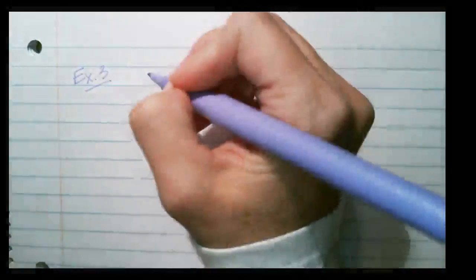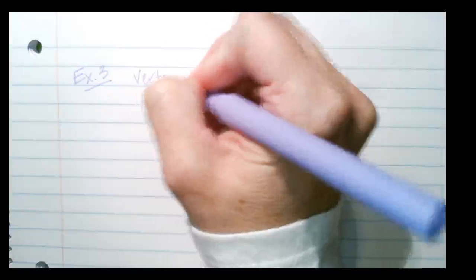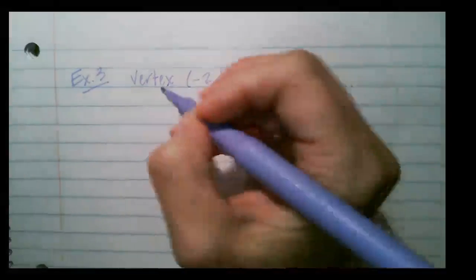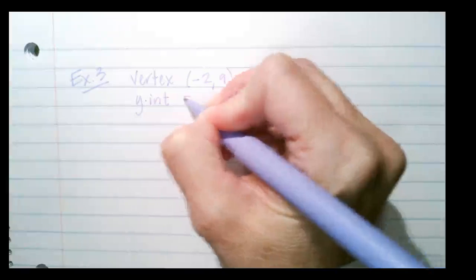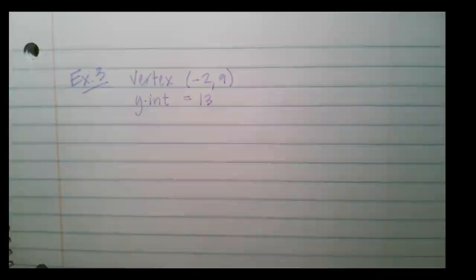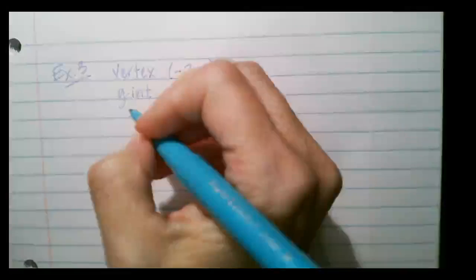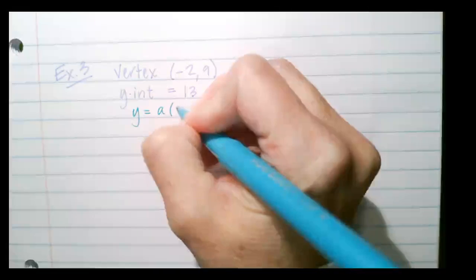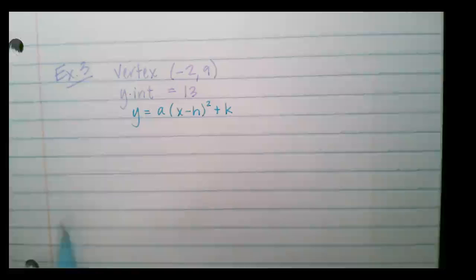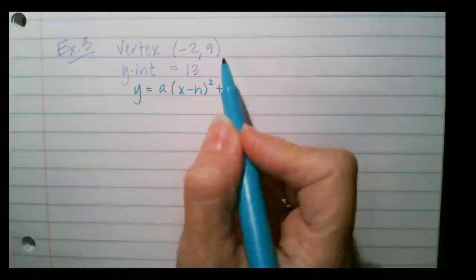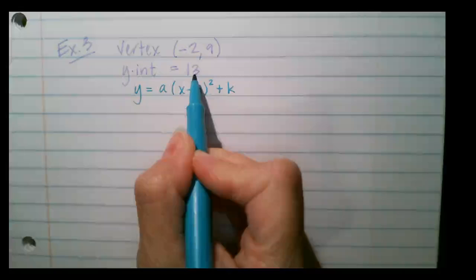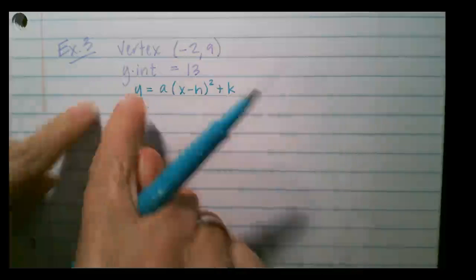For the last example, what if we're given the y-intercept? Example 3: the vertex is at (negative 2, 9) and the y-intercept is 13. Since we're given the vertex, it makes sense to use vertex form: y equals a times (x minus h)² plus k.